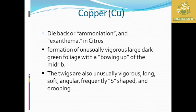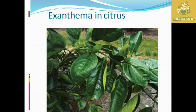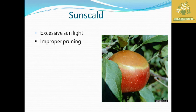Copper deficiency causes dieback and exanthema in citrus. Symptoms include formation of unusually vigorous large dark green foliage with bowing at top of midribs, twisting, unusual vigorous long soft angular drooping of shoots. Sun scald is mainly caused by excess sunlight, often due to improper pruning, where the fruit receives too much sunlight, causing rotting of the fruit and reduced economic yield.